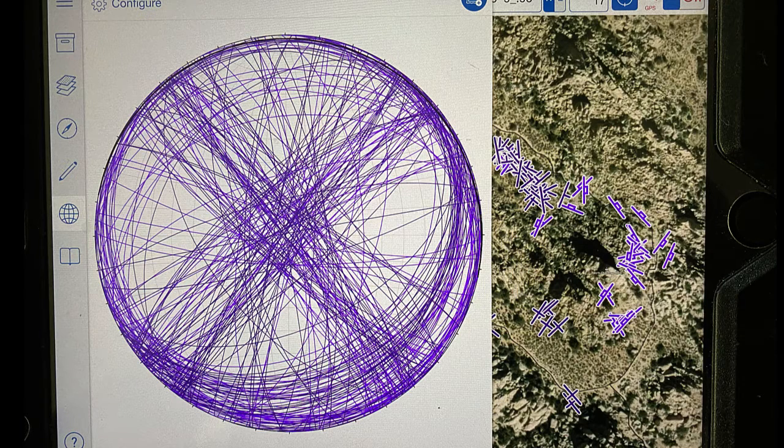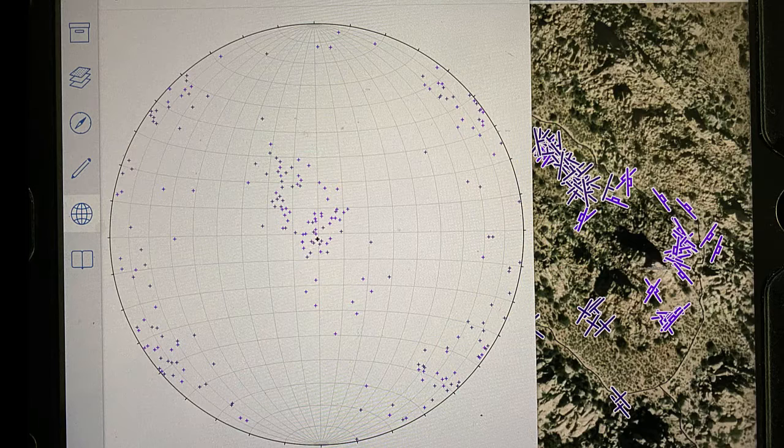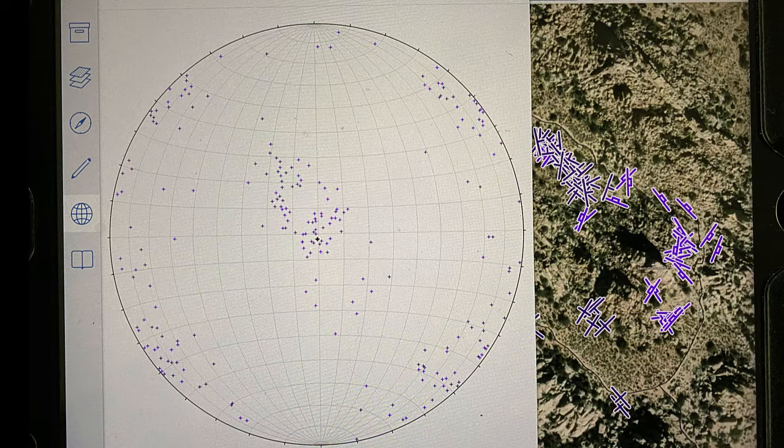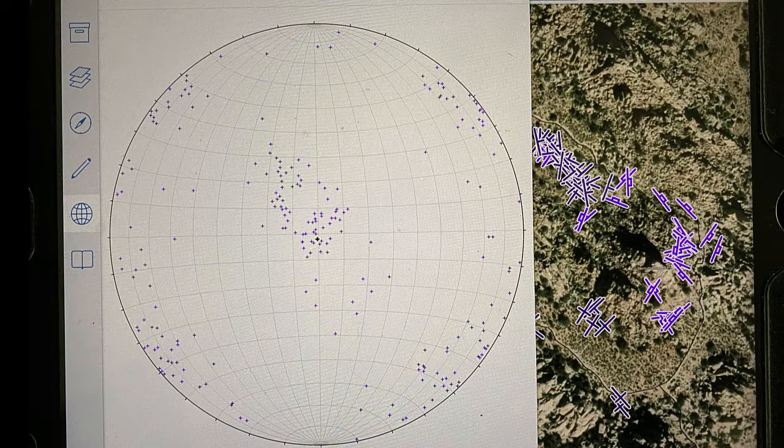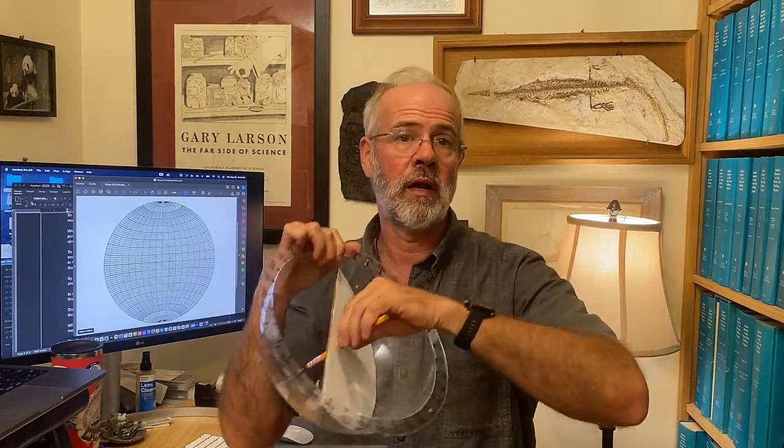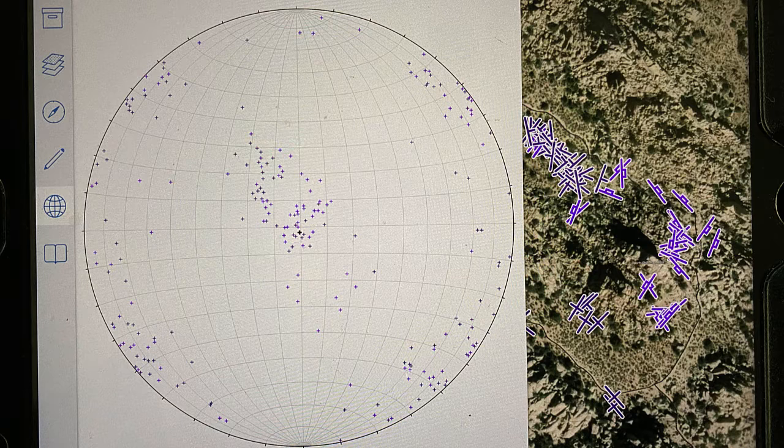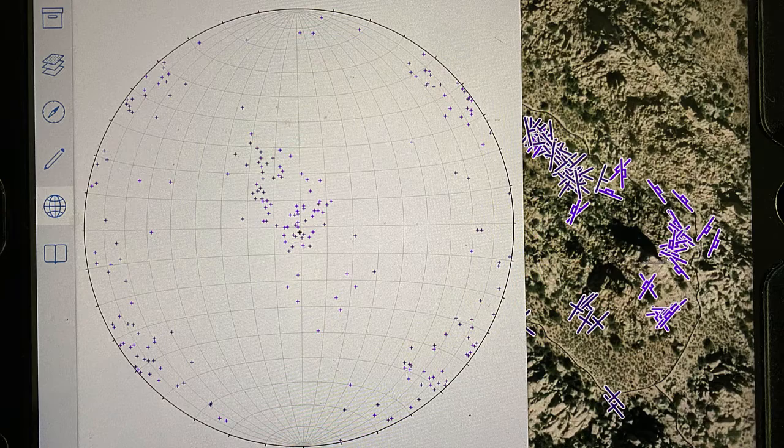So to finish everything up, if we go back to our Joshua Tree data and replace the great circles with the poles to those planes, you can see it makes a much neater and probably more visually appealing kind of diagram. You can see that there's a series of points in the middle of the stereonet, and those must represent planes that are nearly horizontal, and therefore the poles are plotting near the middle. And then there's a series of data points around the periphery of the stereonet, and those must represent very steeply dipping beds where the poles are plotting near the edges.